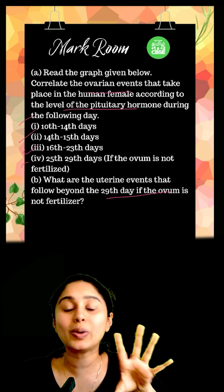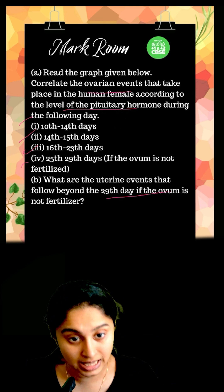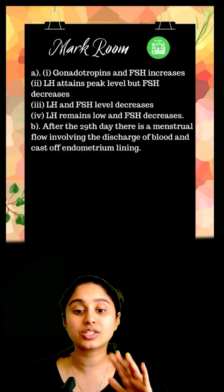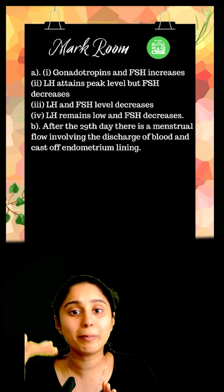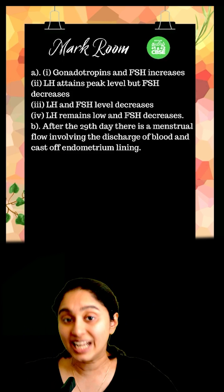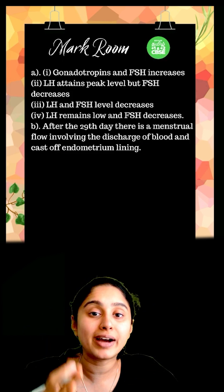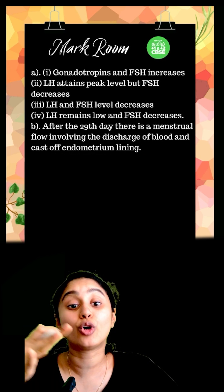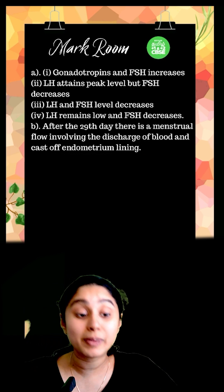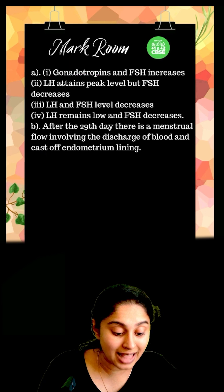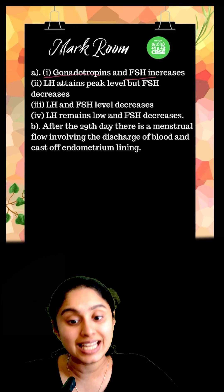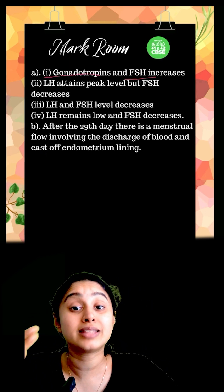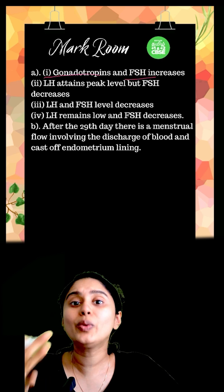This is a simple question from the menstrual cycle. The first five days are the menstrual phase, when bleeding takes place. From day 5 to day 13 is the follicular phase, when gonadotropins and FSH increase. So from day 10 to 14, there will be an increase in FSH and gonadotropins.